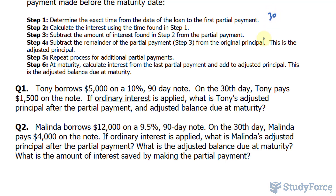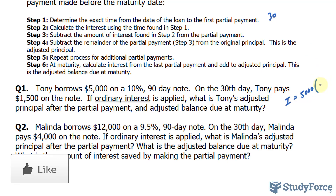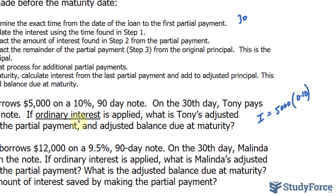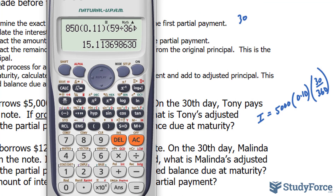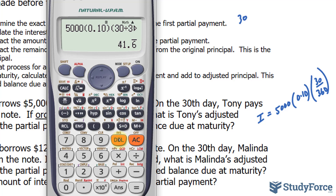Step two: determine the interest using the time found in step one. We'll use the formula I = P × R × T, so: I = 5,000 × 0.10 × 30/360. Notice I'm using 360 even though a year has 365 days. Using our calculator, the interest comes out to $41.67 (41.66 repeating).